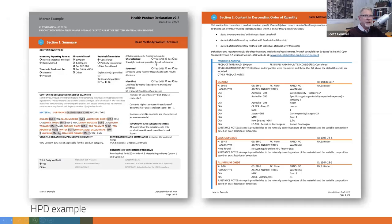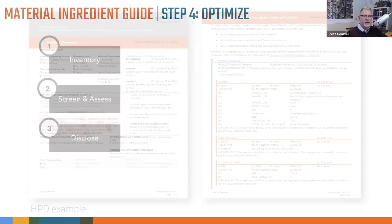Here is a sample of what an HPD looks like. You can see here these are all the ingredients — this is a mortar example — and their corresponding green screen assessment numbers. Everybody's HPD will follow this exact format, so as an architect or a specifier, you can compare information.